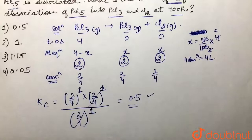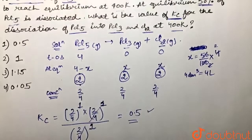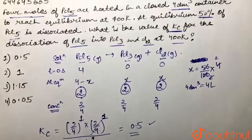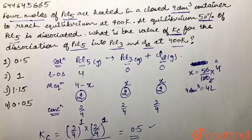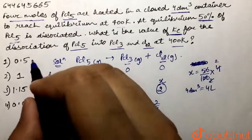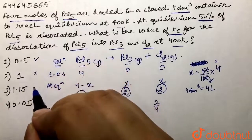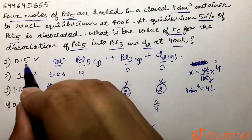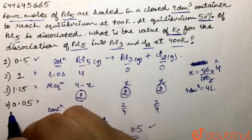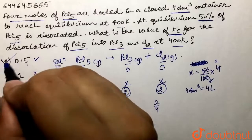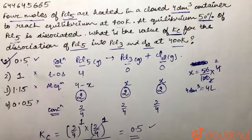Looking at the options, option number 1 is 0.5, which is correct. The other options are not correct. So our answer is the first option — Kc = 0.5.